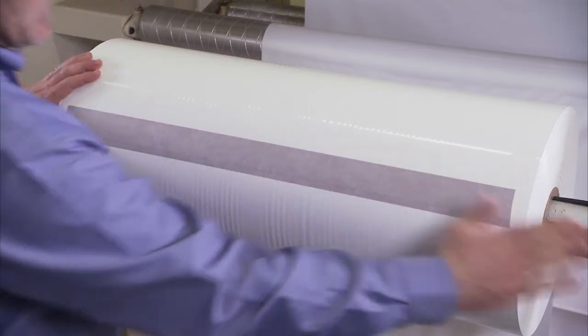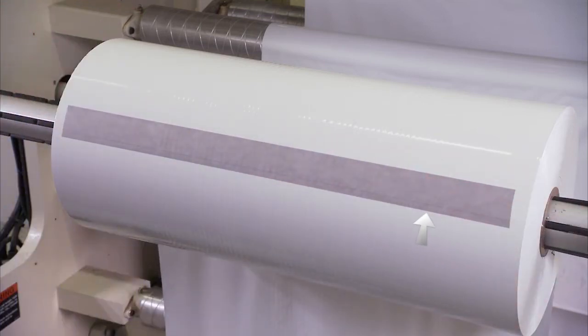Apply the splicing tape so that the adhesive covered by the narrow section of liner will be covered by the last lap of the substrate. Since this roll is coming up from the bottom, the narrow section should be on the bottom.